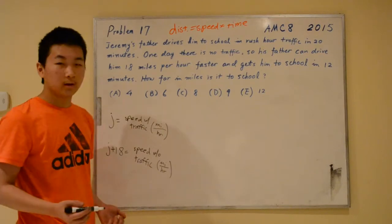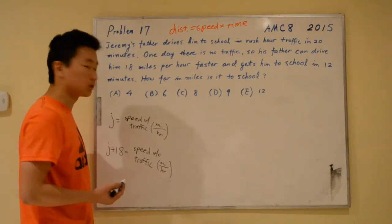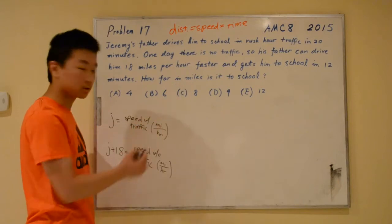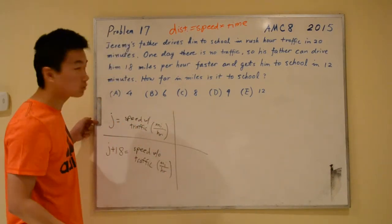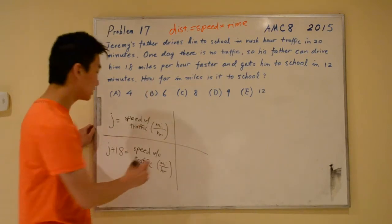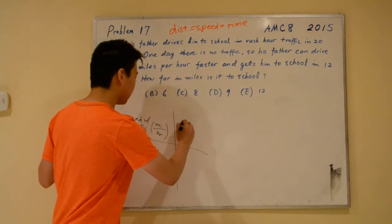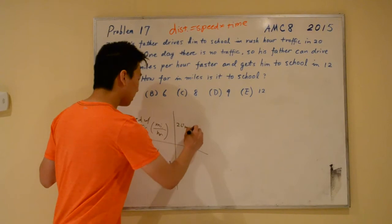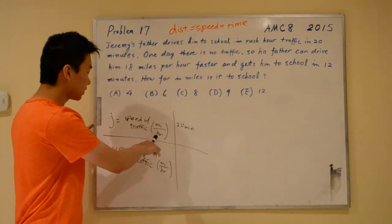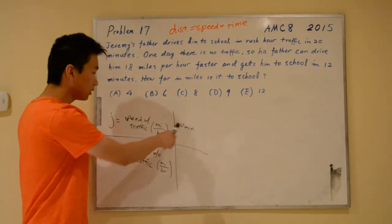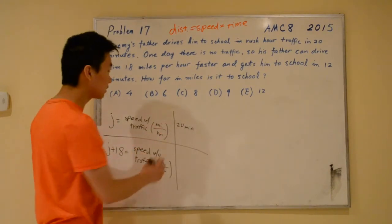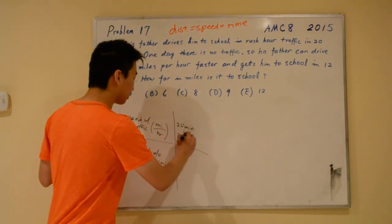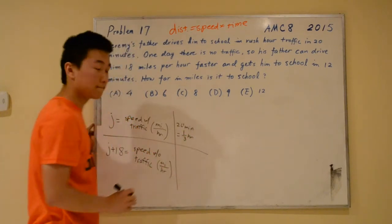For each speed or traffic condition, there is also a different time associated with it. When there is traffic, they drive 20 minutes. But because our unit is miles per hour, we would like the time unit to be consistent. So let's change the minutes into hours. This becomes 1 third of an hour.